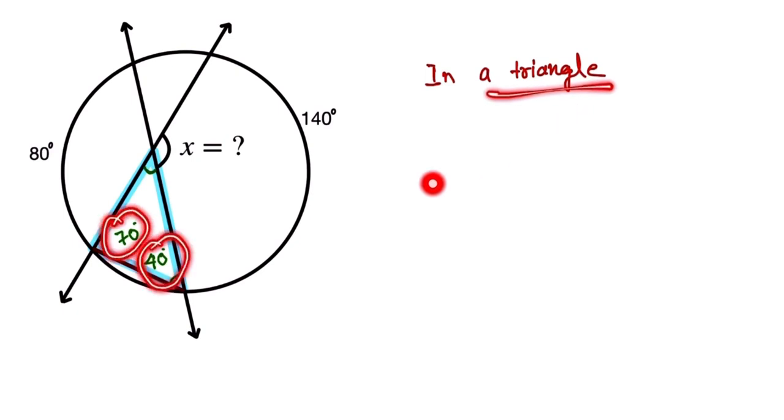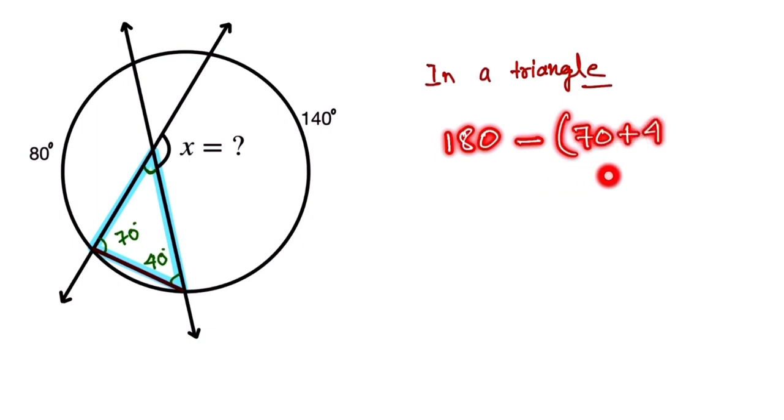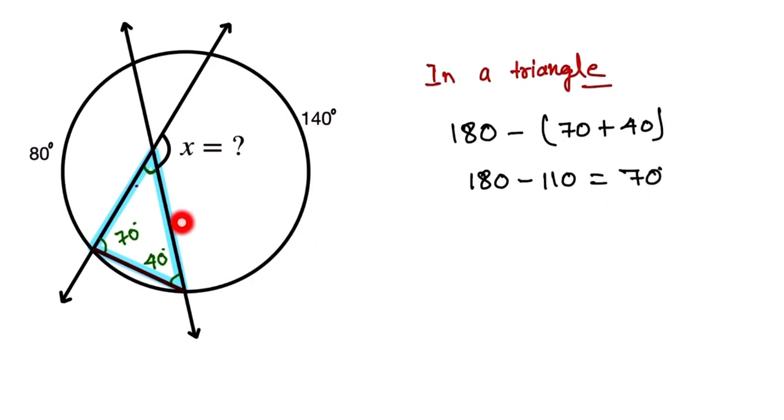Here we add these two angles and subtract from 180 degrees. So 180 minus 70 plus 40 means 180 minus 110 is equal to 70 degrees.